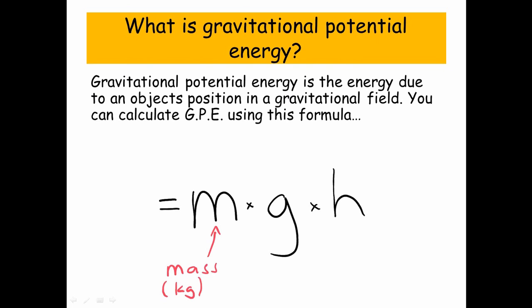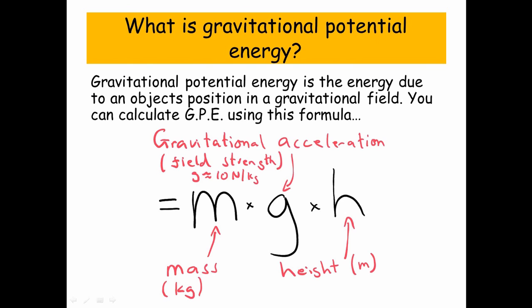Well, m is the mass measured in kilograms, g is gravitational acceleration, it's sometimes called gravitational field strength, and here on planet Earth it's approximately 10 newtons per kilogram, and h is the height above ground level, which is measured in meters.